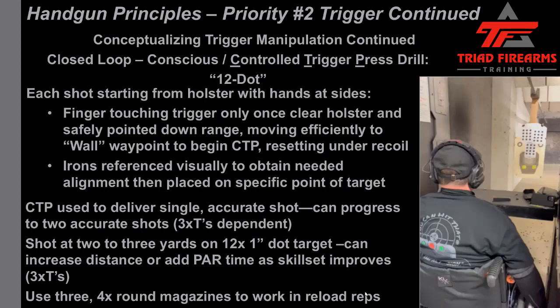The next example swings to the polar opposite of that radio dial — the closed loop controlled trigger press drill. Each shot starts from the holster, hands naturally at sides. The finger touches the trigger only once cleared from the holster and safely pointed downrange. You then move the trigger finger efficiently through the slack pre-travel to the wall waypoint, at which point you begin the controlled trigger press. We do all our work from the wall. Gradually increasing pressure to the shot, once the shot goes off, reset under recoil — get ready for the next shot.